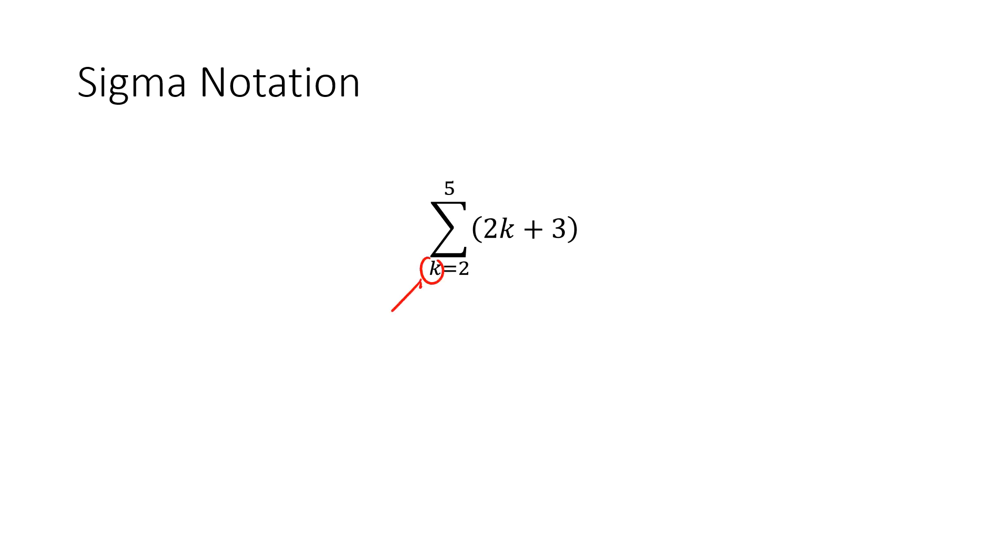So k here is what's sometimes called the index variable, and that's a variable that's going to be changing as we go through the sum. This 2 here is the starting value of k, and then the 5 that's on the top here is the ending value of k. So k is going to start at 2, it's going to go up by 1 every time, so 2, 3, 4, and then it's going to end at 5. This expression here, 2k plus 3, that's the actual expression that we're going to be adding.